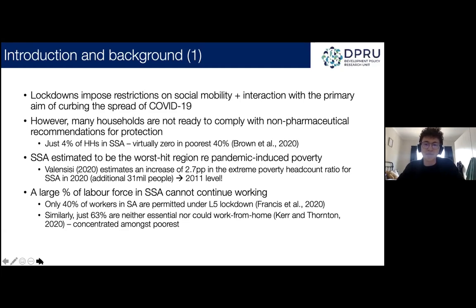In South Africa, using pre-crisis labor force data, David Francis and the team at VITS estimated that just two in every five workers — 40% — were permitted to work under the most stringent lockdown level five. Similarly, Amy Kerr and Andrew Thornton, also at UCT, estimated that just over three in every five workers in South Africa were neither essential workers nor could they work from home. The same paper estimated that just 14% of workers could feasibly work from home.